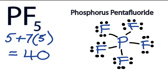If you wanted to make sure you had the right structure, you could check the formal charges, and you'd see that they're all 0. So this is the correct structure for PF5.